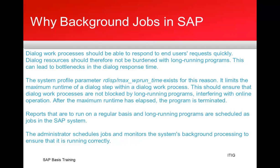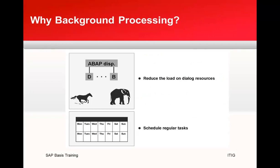A jobs administrator schedules jobs and monitors the system's background processing to ensure it is running correctly. In this figure you can see that background jobs are like an elephant — they do heavy lifting — while dialogue processes are like horses, doing fast processing. Background jobs can also be scheduled on periodic or regular intervals.